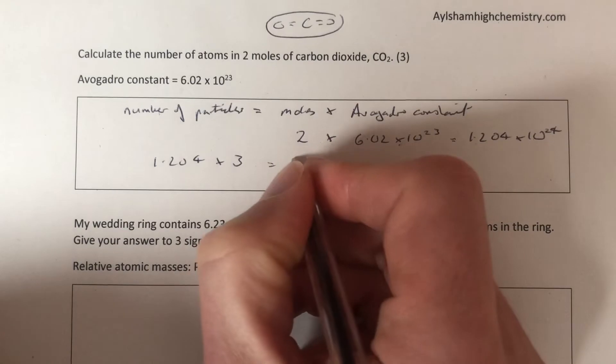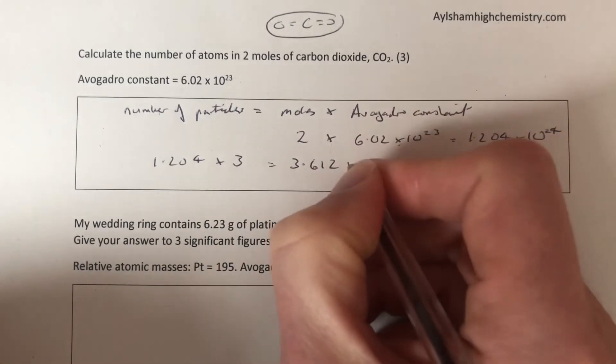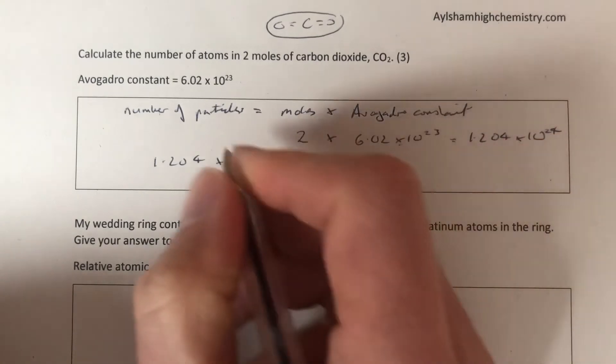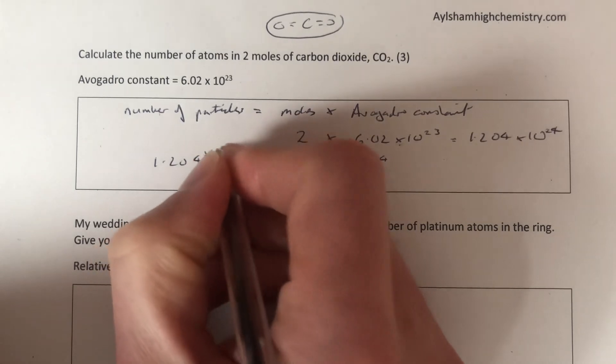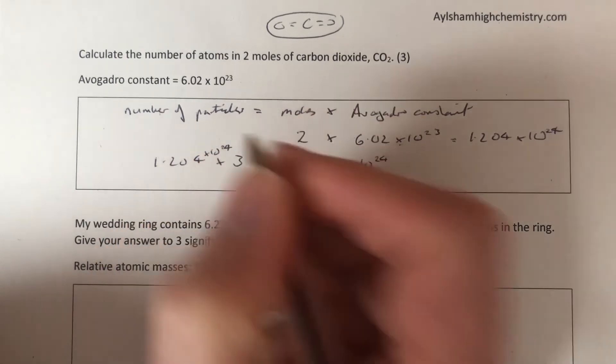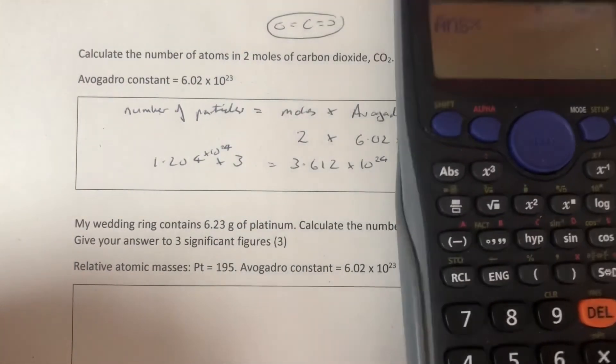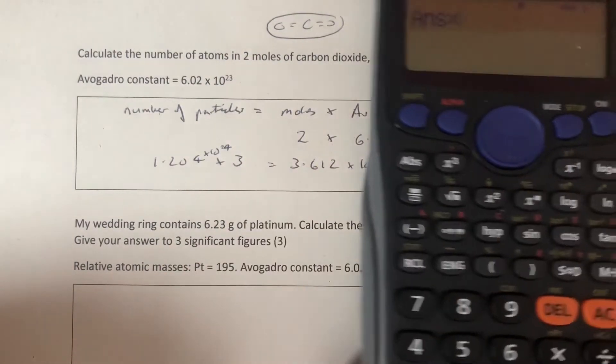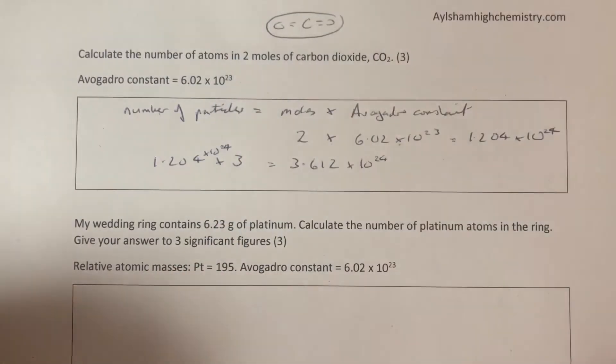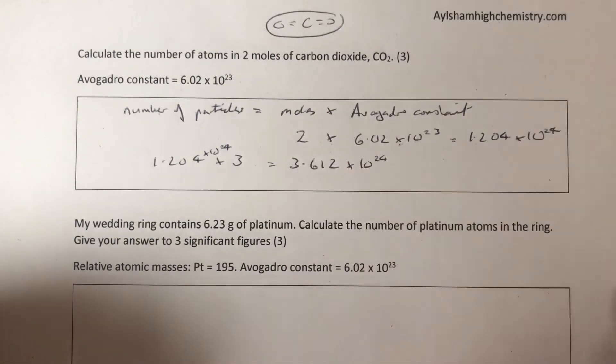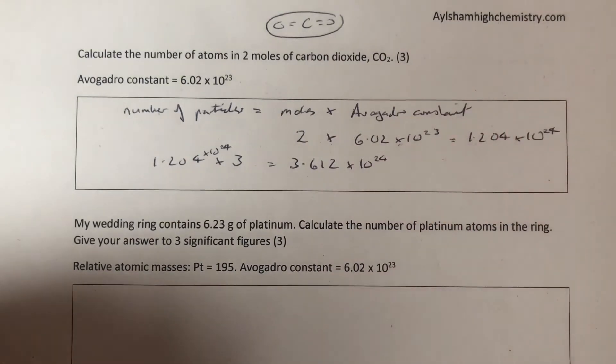What's that going to be? That's going to be 3.612 times 10 to the 24. Let's check that in the calculator because I'm not as confident. So there's our number, and let's multiply that by 3. 3.612 times 10 to the 24. I'm correct. All these questions by oceanhighchemistry.com.